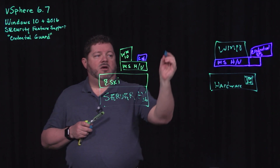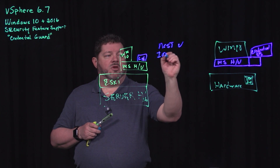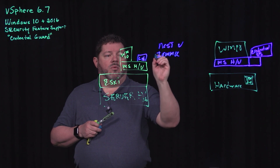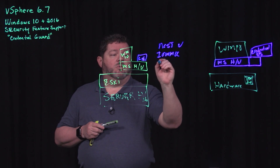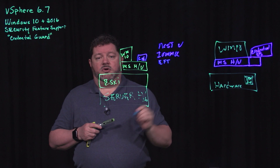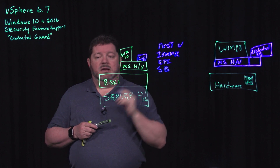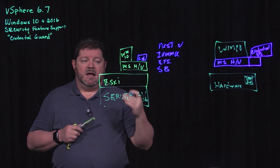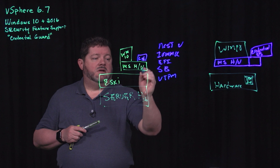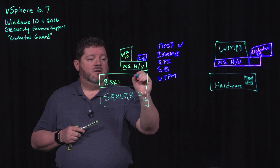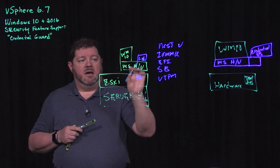Now, in order to do that, we have to expose nested virtualization. We have to expose IOMMU. And we have to set a number of other features. So we will turn on EFI firmware, we will turn on secure boot, and if we so choose, we will allow the use of a virtualized trusted platform module — a vTPM. This virtual machine now gets a vTPM exposed to it.